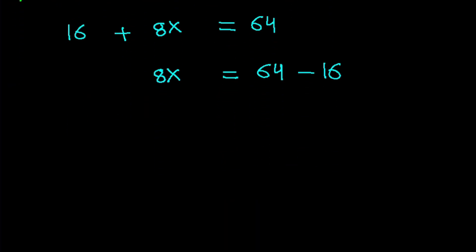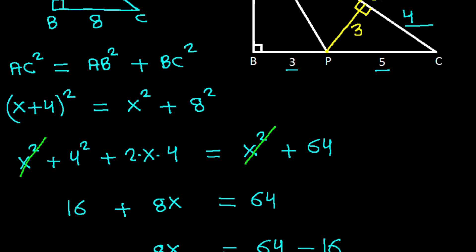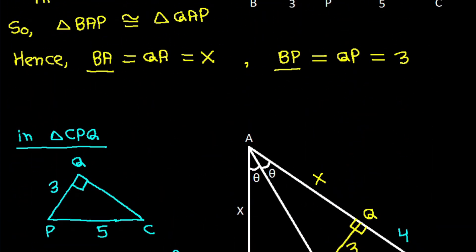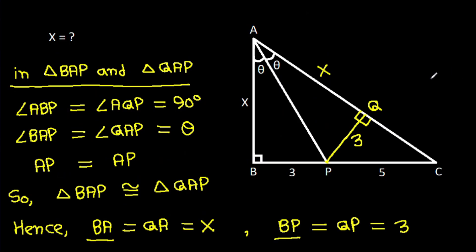8X equals 48, so X will be 48 over 8. 8 times 6 is 48, so X is 6.